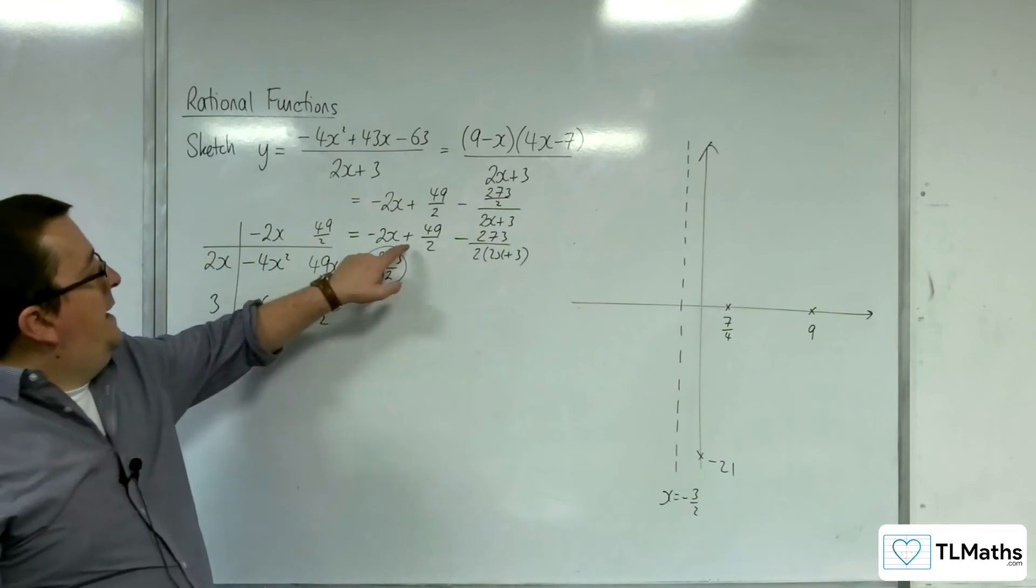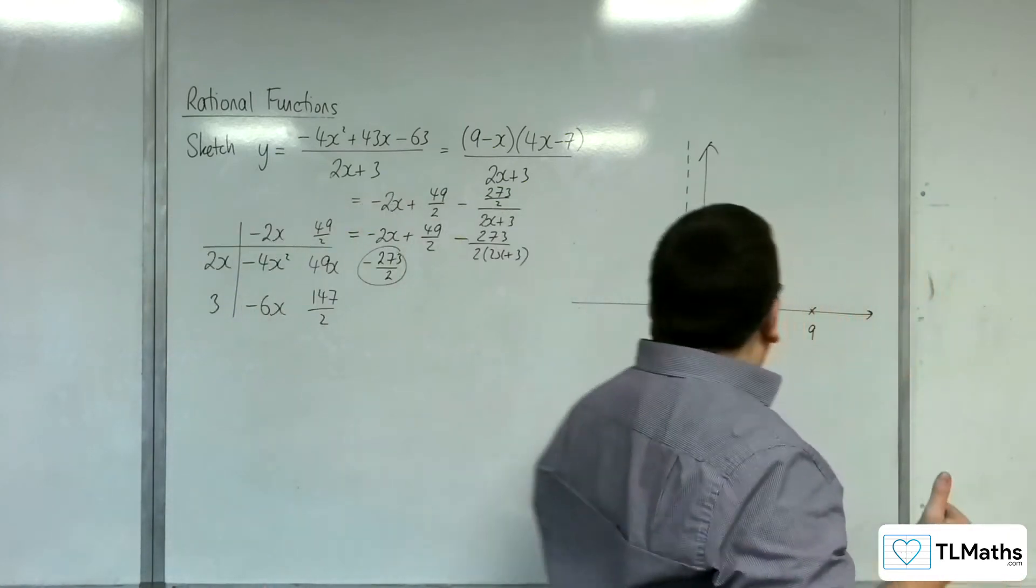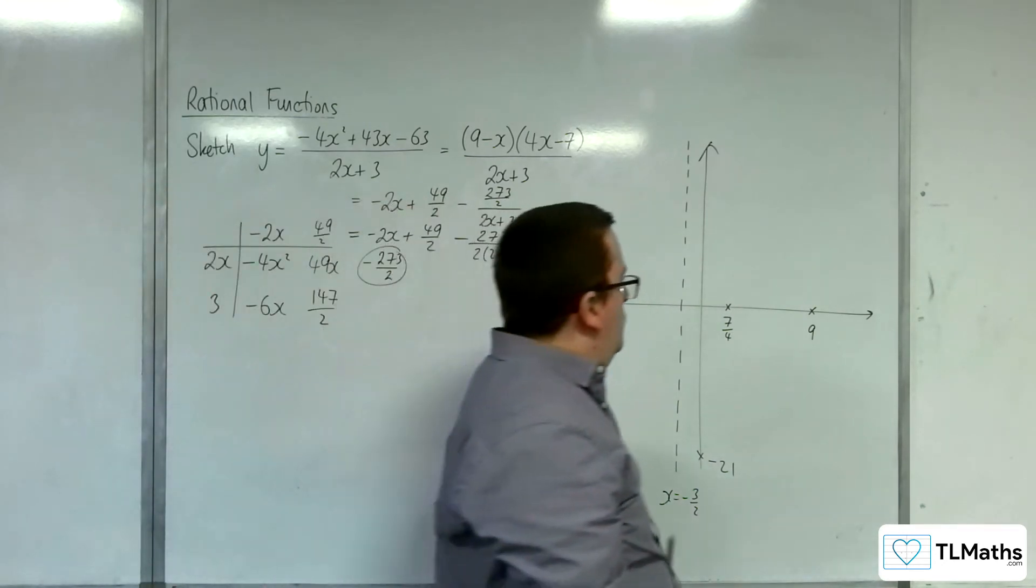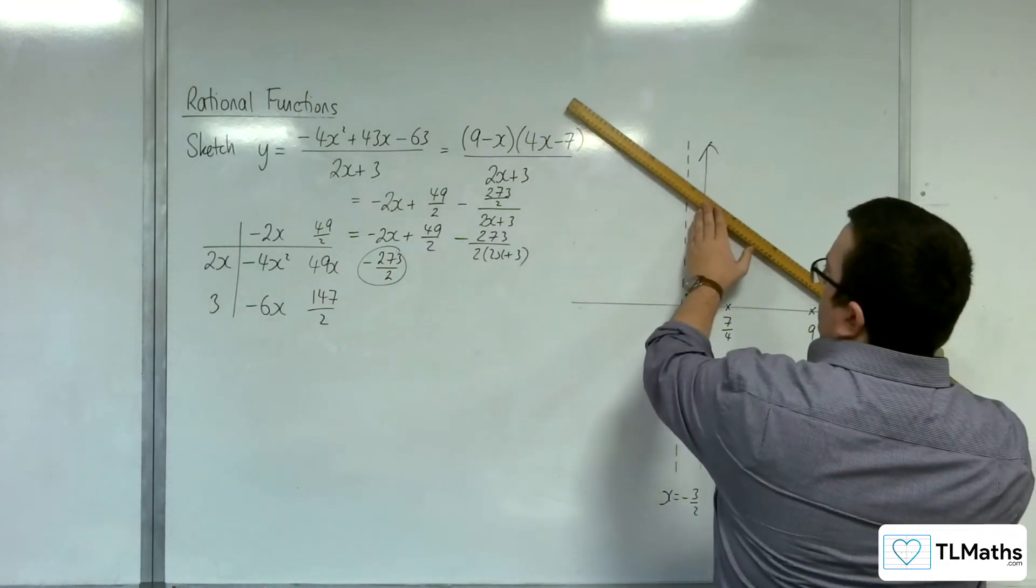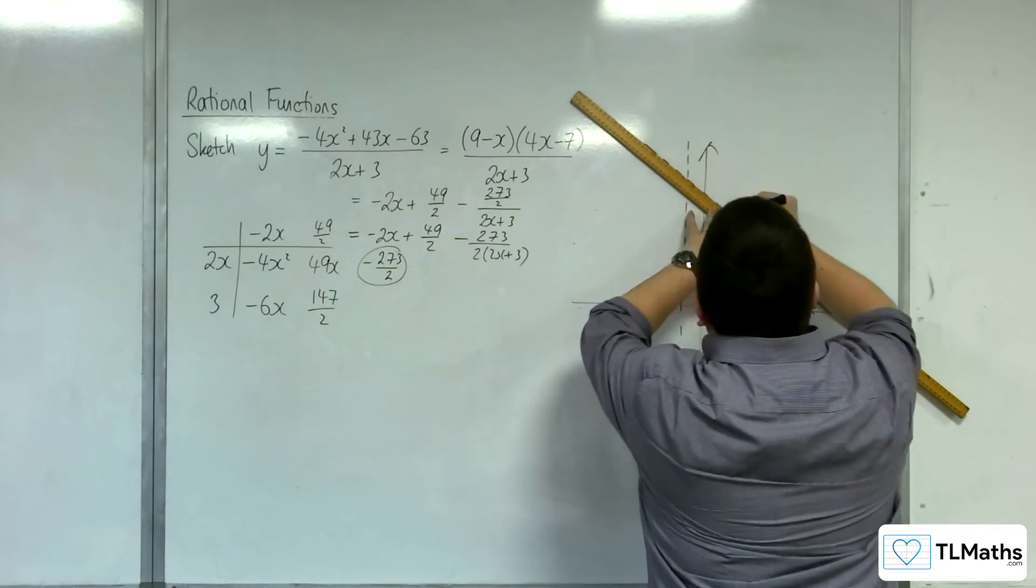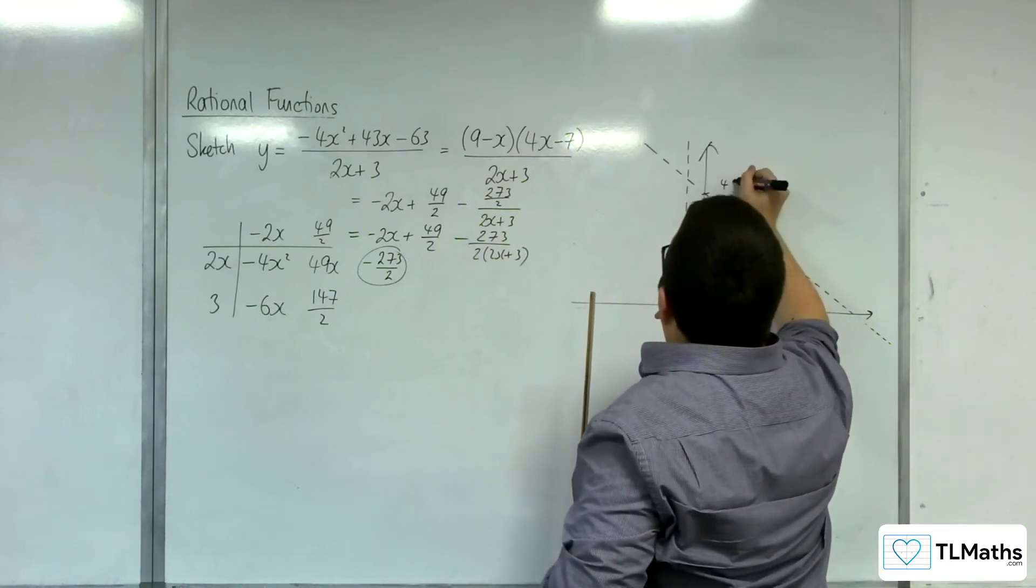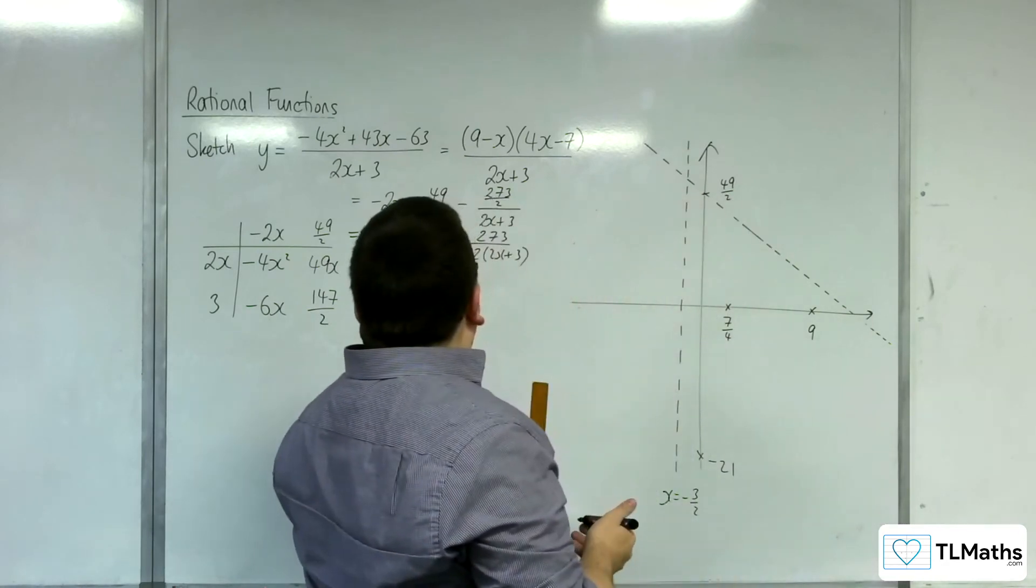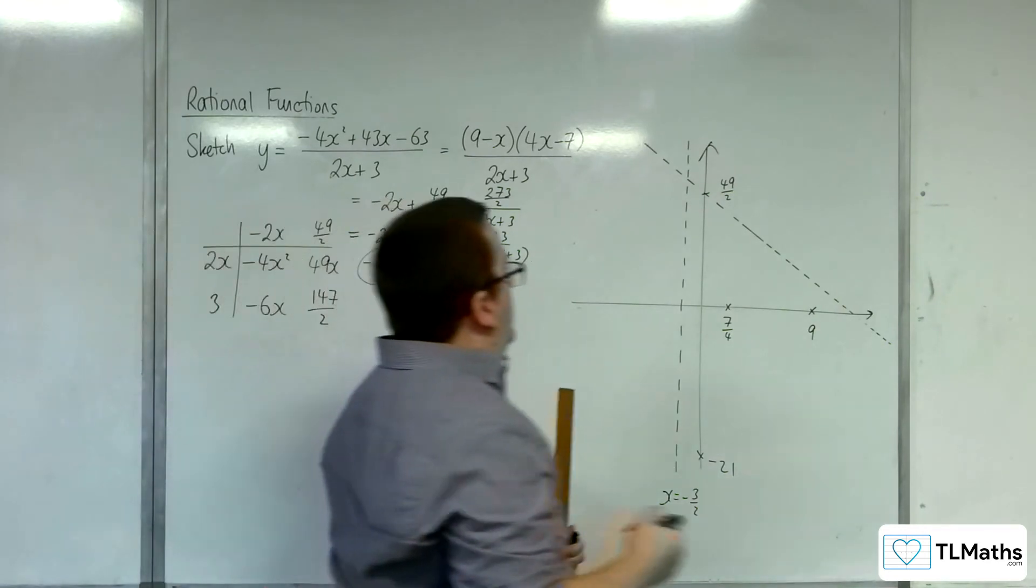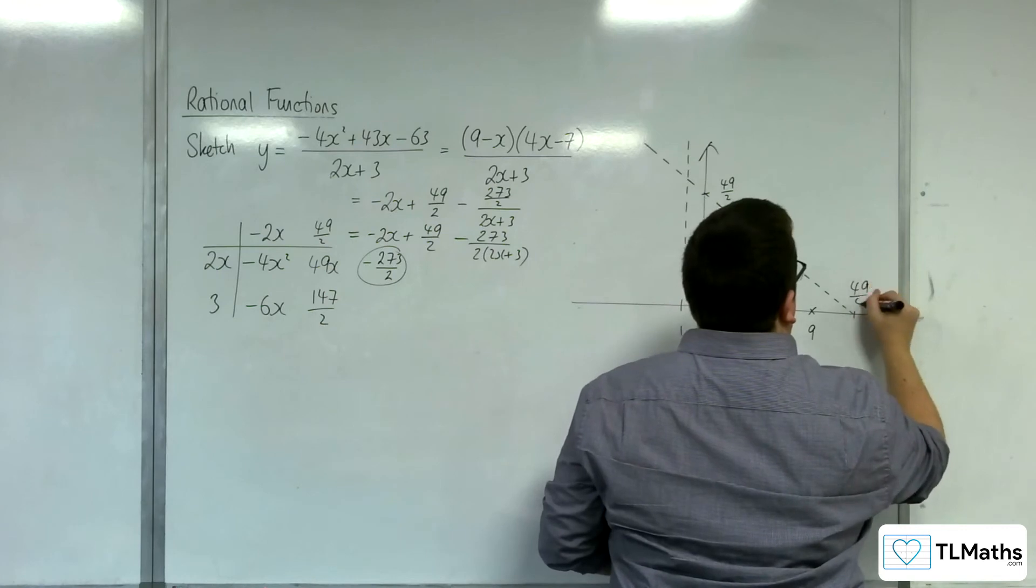So we've got an oblique asymptote with equation y equals minus 2x plus 49 halves. OK. Right, now where's that crossing? So that must be crossing the x-axis somewhere over there. So that's at 49 halves, and then that would be 49 quarters, wouldn't it? So when y is 0, 49 quarters. Oh, I'd best put that on top, actually.